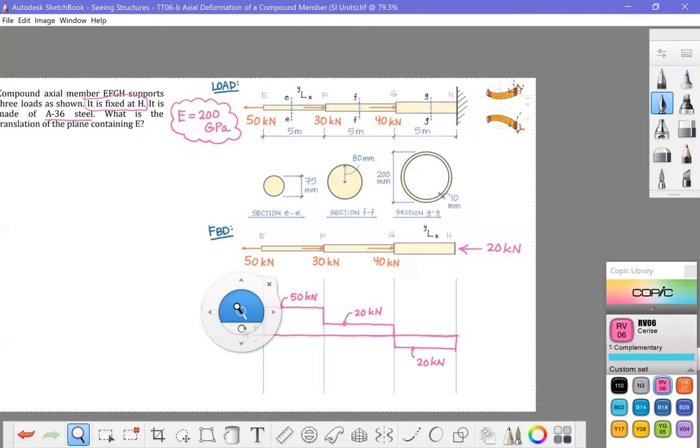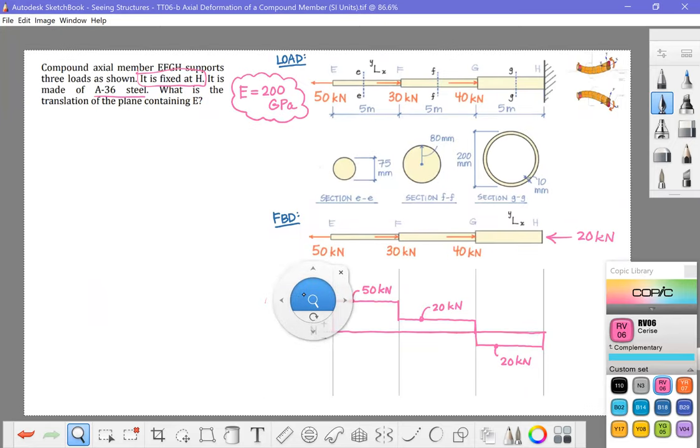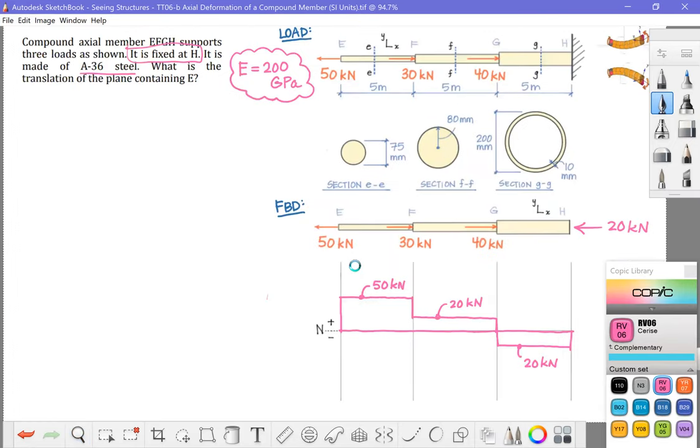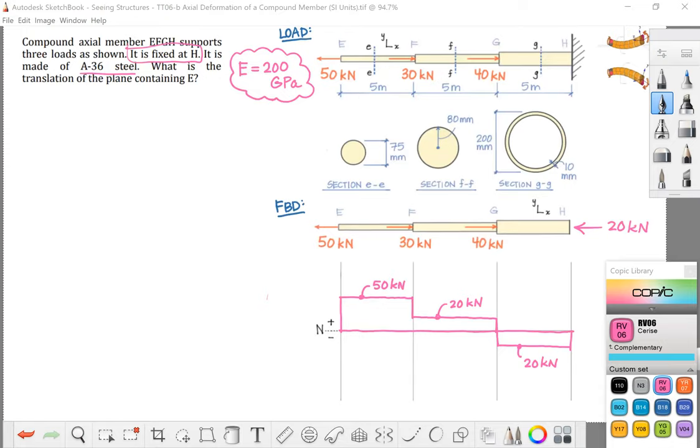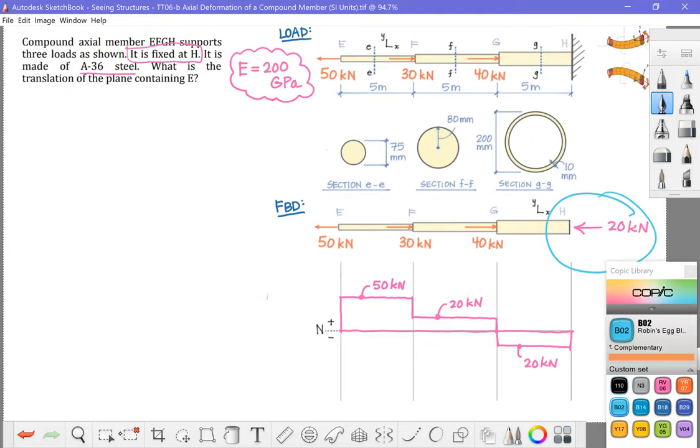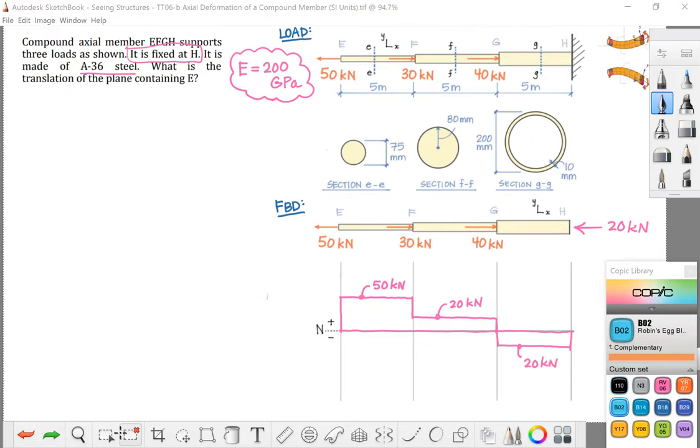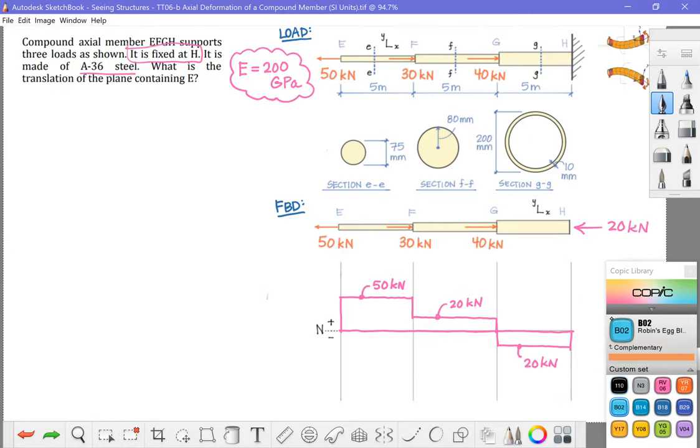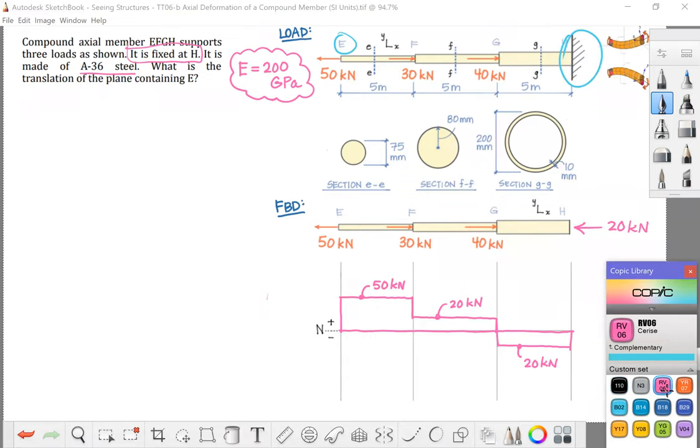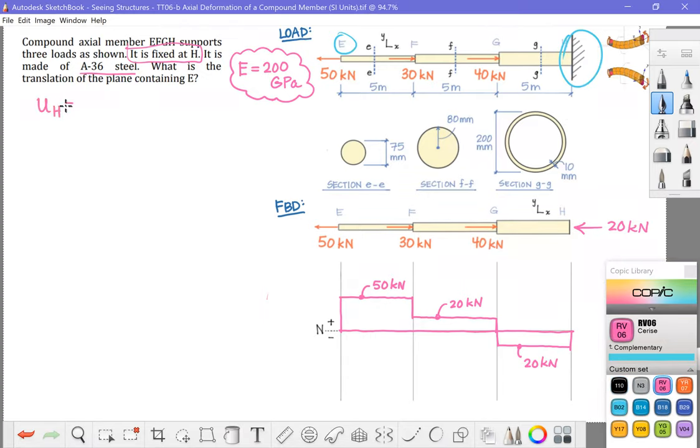All right, so doing this step, diagramming the internal normal force is an important concept for this unit. We did our global equilibrium and determined our reaction there first. After that, we did our internal normal force internal axial force diagram. We're asked to find translation of a plane containing E. And since E is very far away from the only thing we know, which is that H doesn't move,